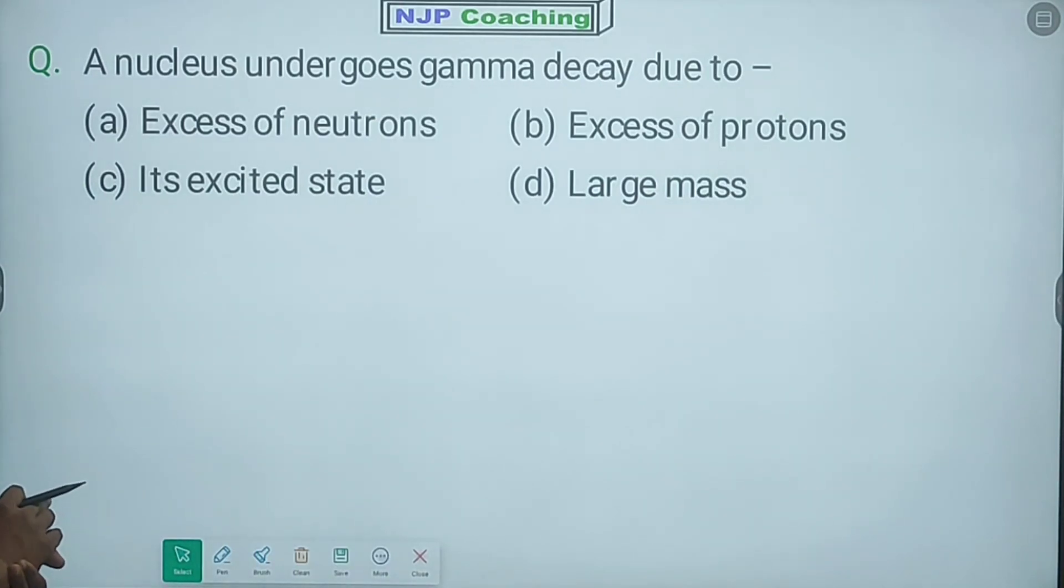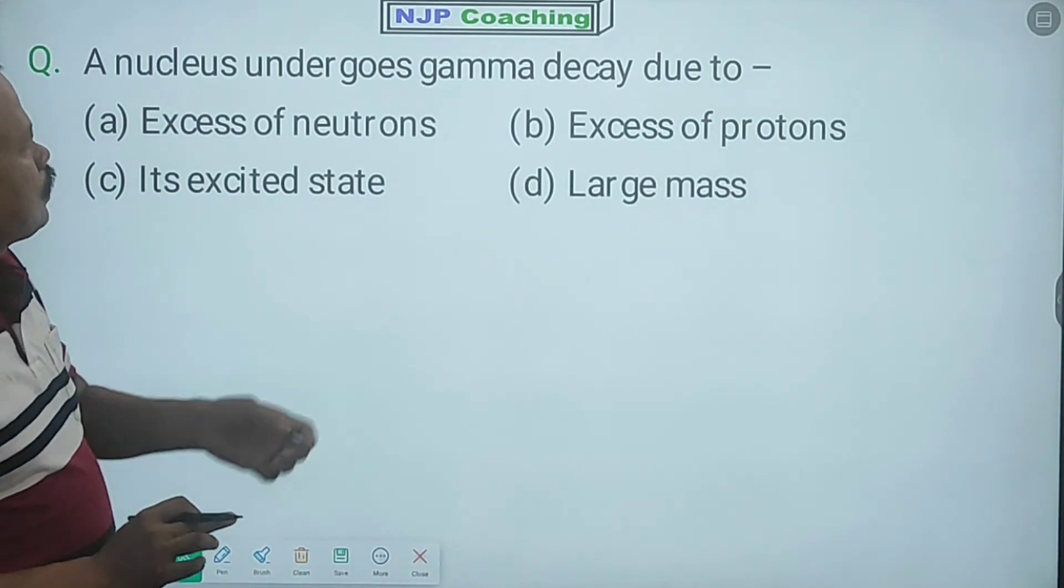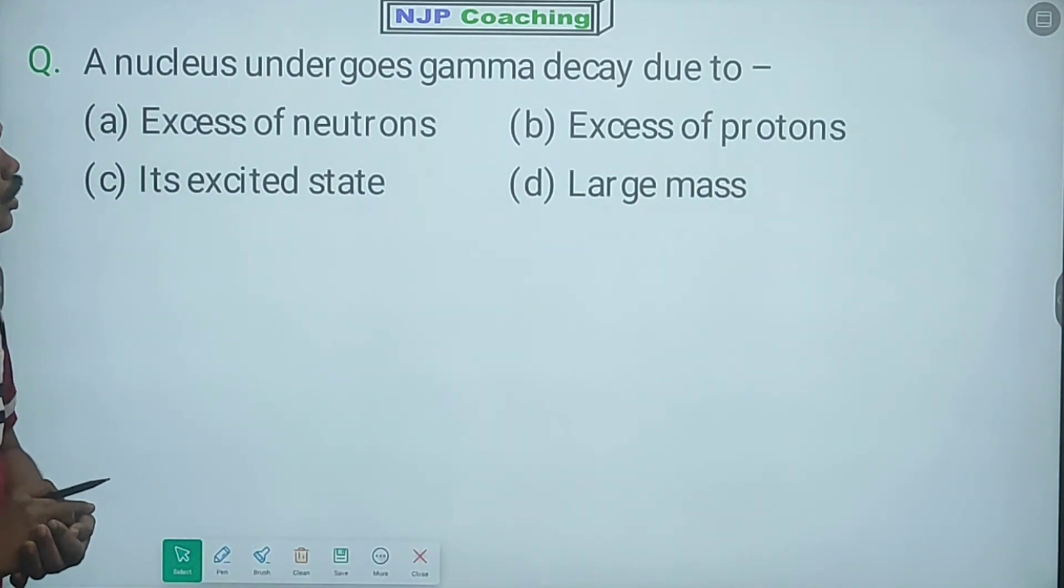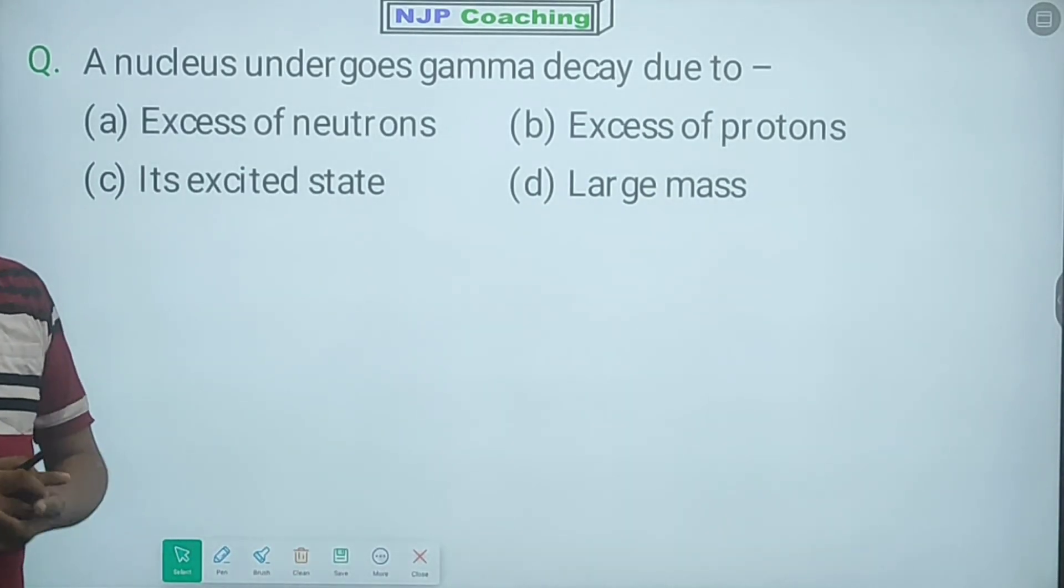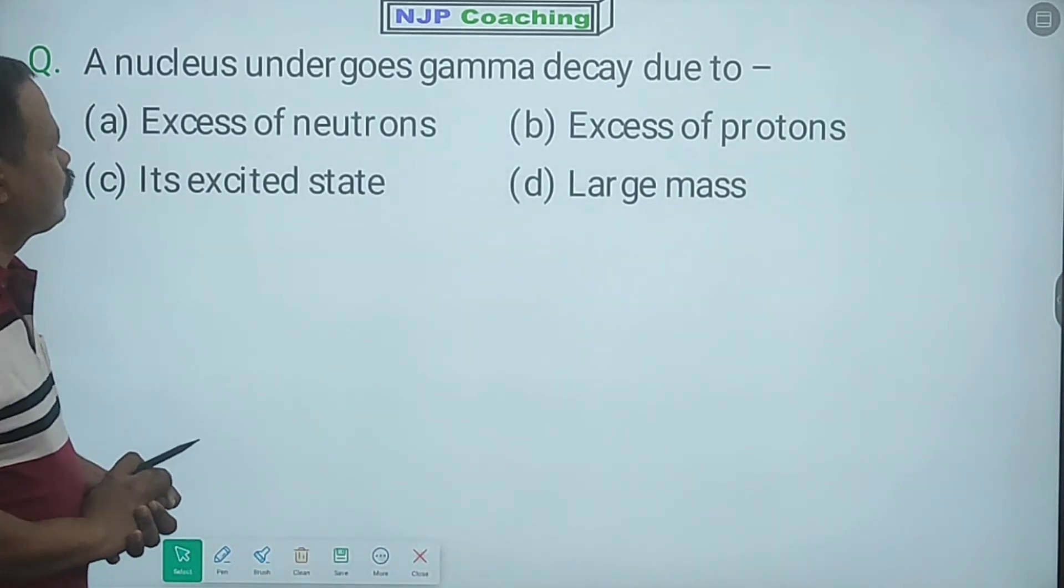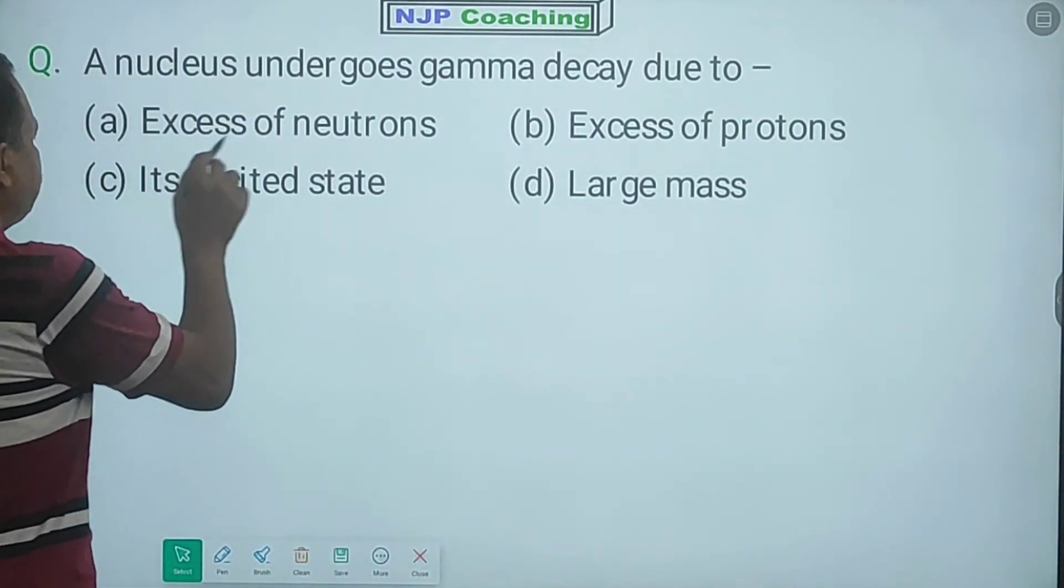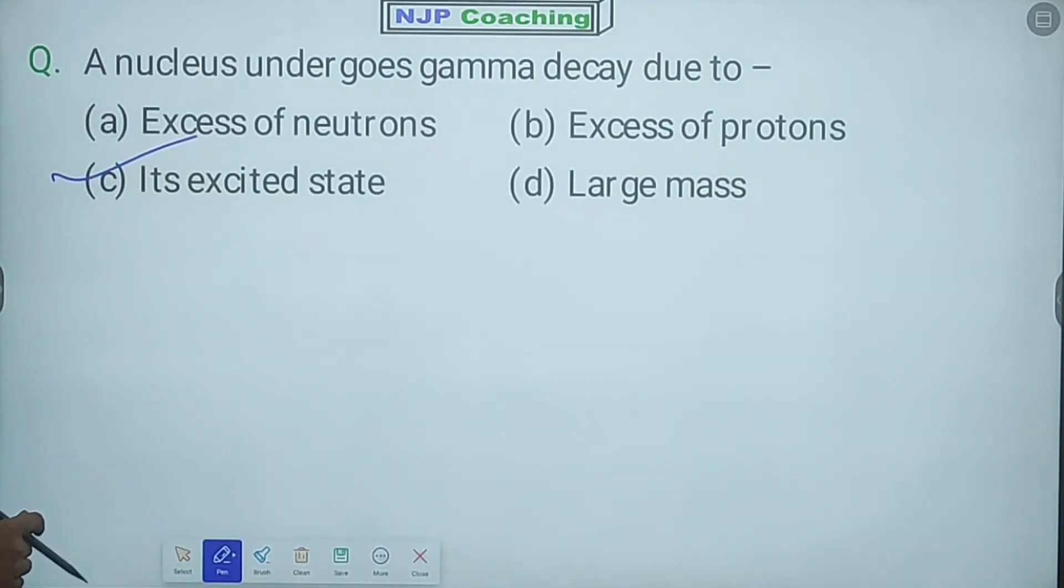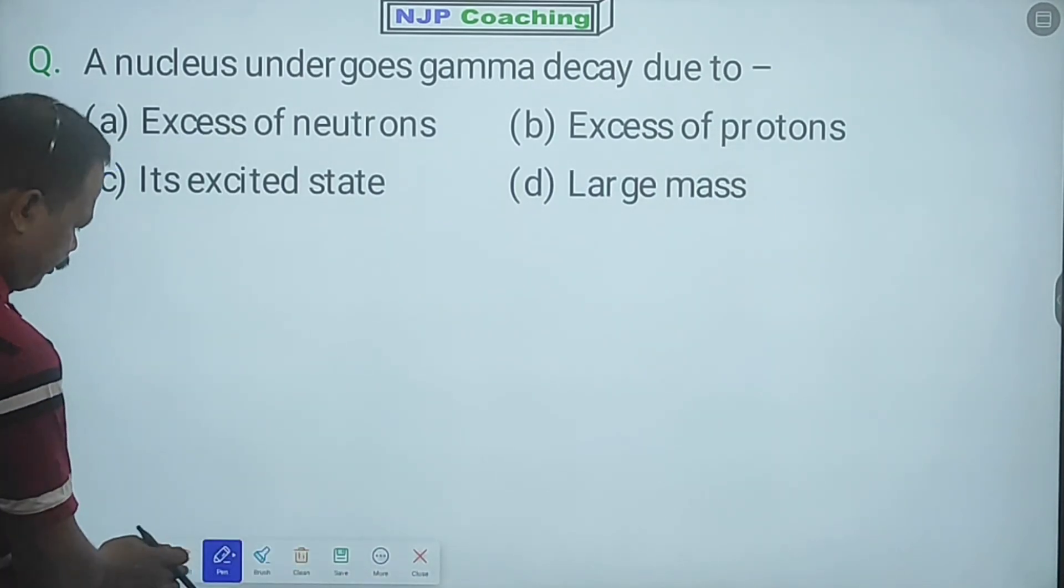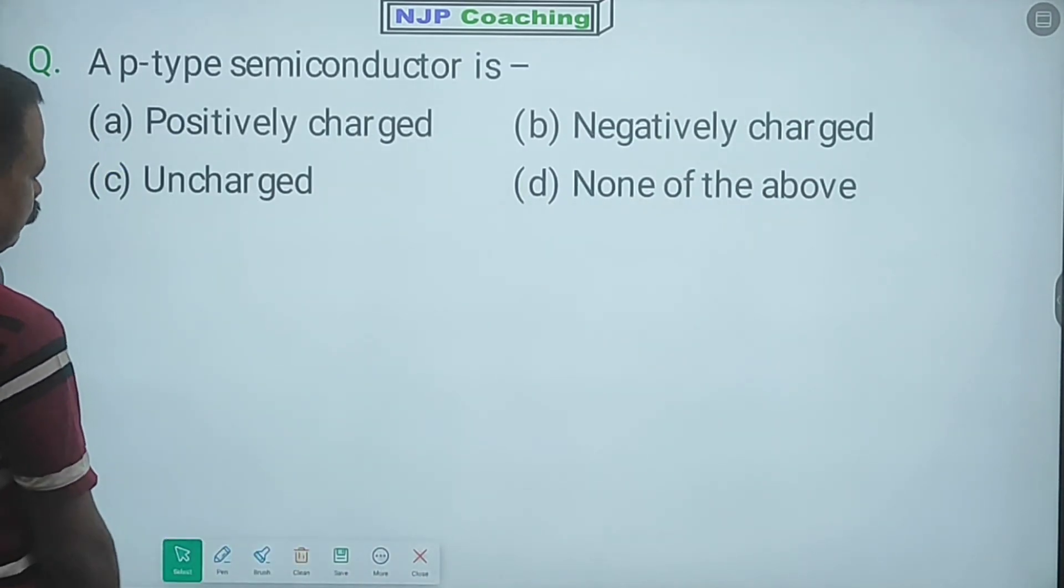A nucleus undergoes gamma decay due to excess of neutrons, excess of protons, excited state, or large mass? It's excited state. Excited state. Okay? Next.